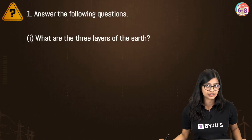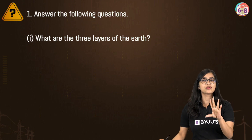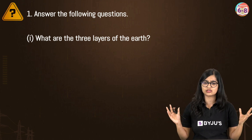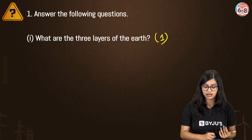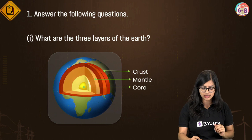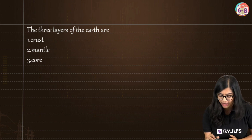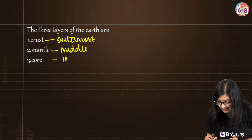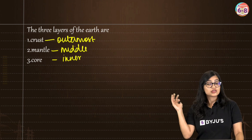The first question is: what are the three layers of the earth? This is not asking you to describe or explain the layers — just to state them, which can come for 1 mark. The three layers of the earth are crust, mantle, and core. Crust is the outermost layer, mantle is the middle layer, and core is the innermost layer. You don't need to go into structural details for this question.